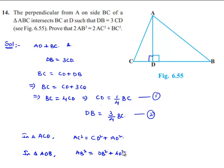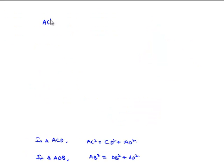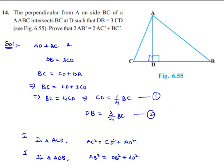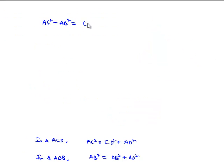So let us subtract both the equations. Then we get AC square minus AB square. AD square will be cancelled and we are left out with CD square minus DB square.